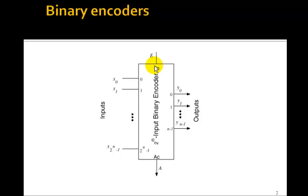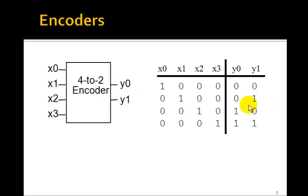There can often be an enable signal and also an output to indicate if it's a valid output. We'll see that. Here's an example of a 4 to 2 encoder. So it's 4 inputs and 2 outputs. So it's just the opposite of a decoder.